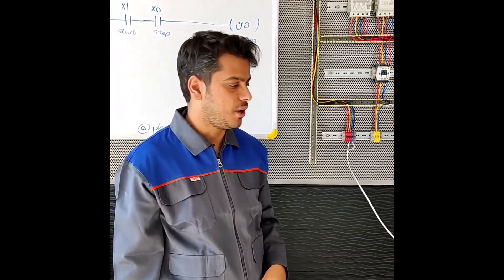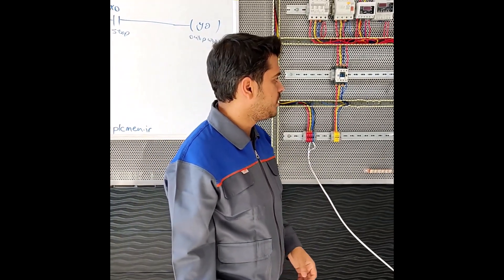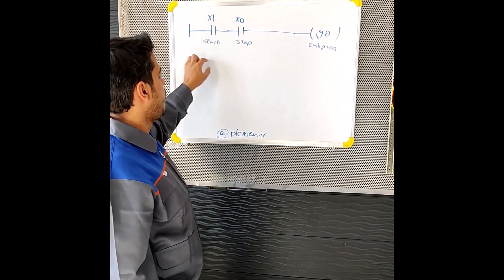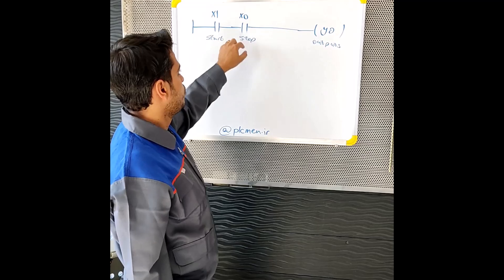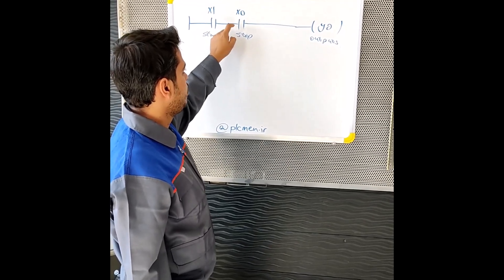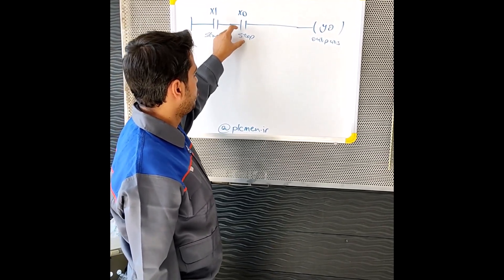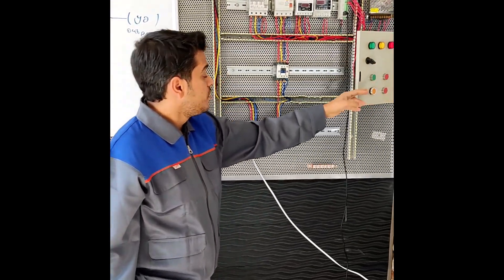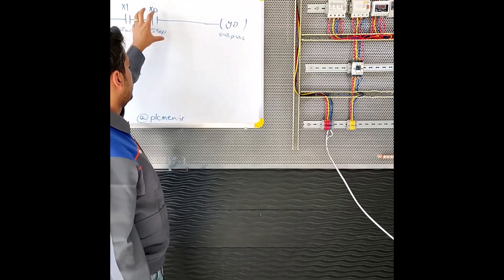The program will be downloaded into the PLC as follows: when the start input is activated, because the stop contact is connected to the NC input, the output is activated. So when the start input is activated, the output is activated.